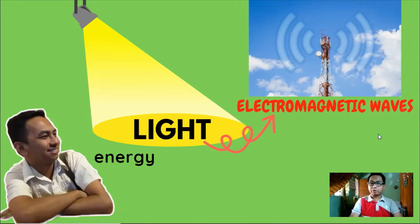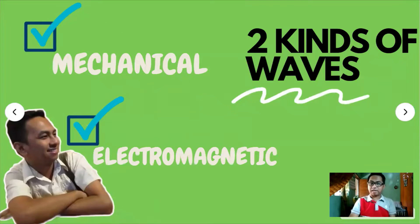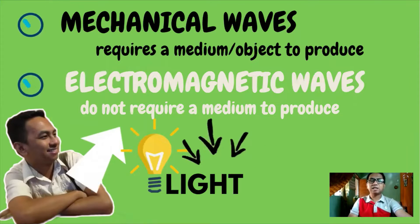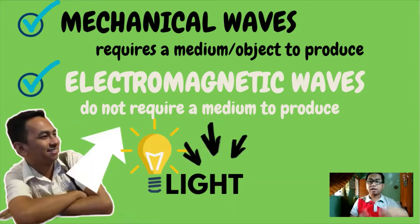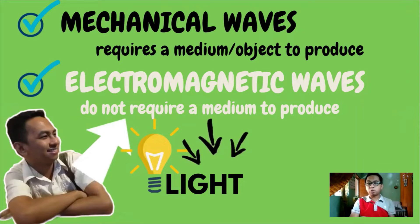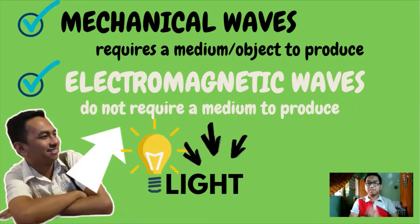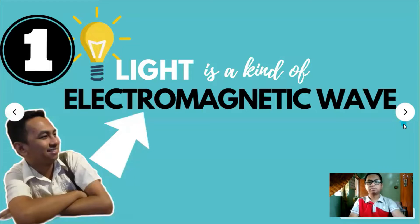Light is a form of energy that travels in electromagnetic waves. As we remembered from the previous lesson, waves have two kinds: the mechanical wave and electromagnetic wave. Mechanical wave requires a medium or an object to produce, like the three states of matter - solid, liquid, or gas. While electromagnetic waves do not require a medium or an object to produce. The best example of this wave is light. For our first characteristic of light, light is an example of electromagnetic wave.